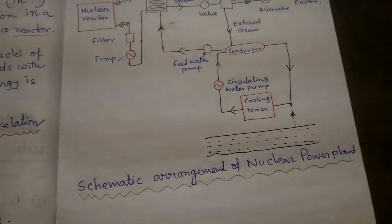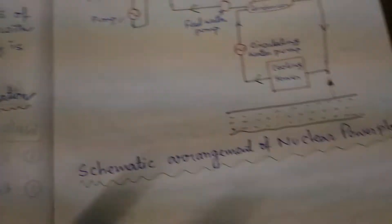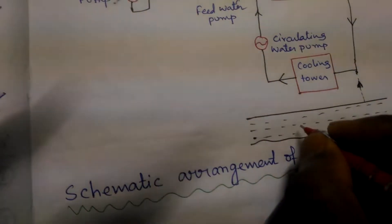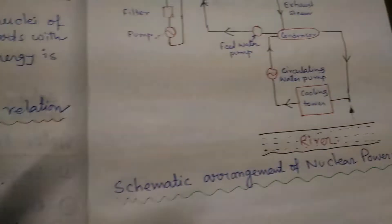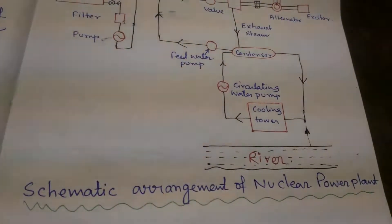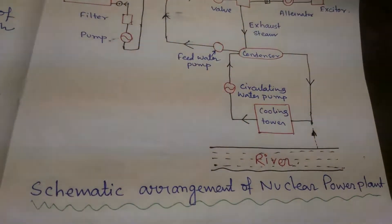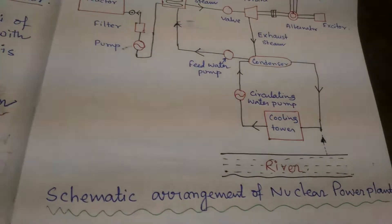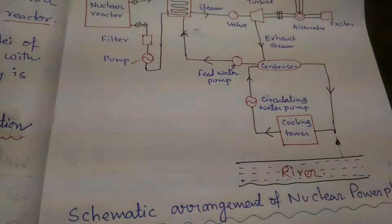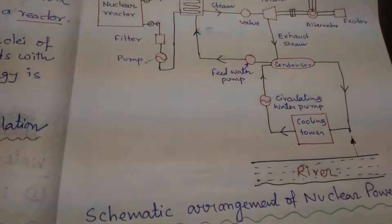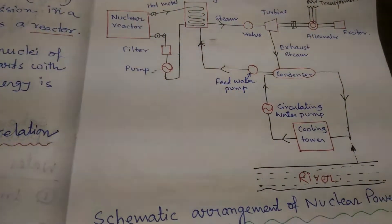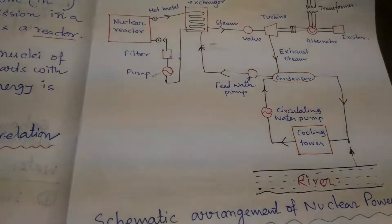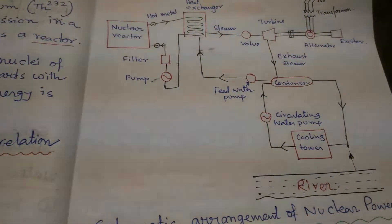Also, this plant is connected with the river. The selection of the site for a nuclear power station — the following points should be kept in mind: availability of water, disposal of waste, distance from populated areas, and transportation facilities should be there.